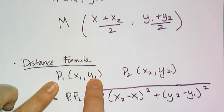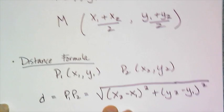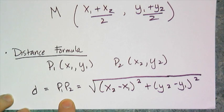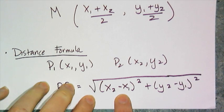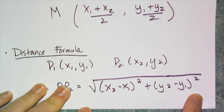So point 1 is x1, y1, point 2 is x2, y2, and the distance between those two points, or P1P2, is the square root of the difference of the x's squared and the difference of the y's squared.